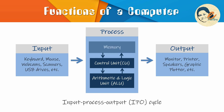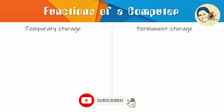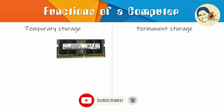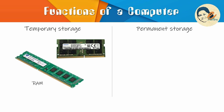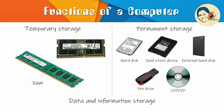Next comes storage. Storing data and information is the fourth major function of the computer. The computer saves the data for later use. A computer uses two types of storage components: temporary and permanent. Temporary storage components store data temporarily and are erased when not needed anymore or when the system is shut down. RAM is a compulsory temporary storage component of the computer.